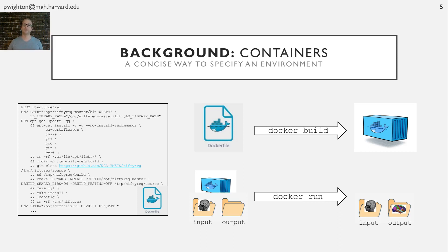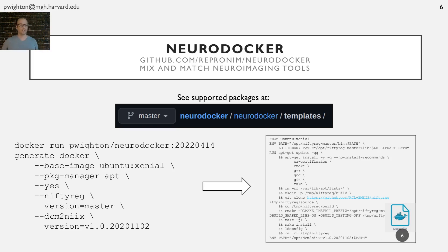While Docker is great at specifying environments, it lacks a framework for easily reusing individual components. While multi-stage builds partially alleviates this problem, a tool to help mix and match software versions and create Docker files would streamline the process considerably. This is where NeuroDocker comes in. NeuroDocker is a great open source tool to help pick and choose exact versions of software packages and easily create Docker files. For example, the NeuroDocker command on the left generates the Docker file you see on the right. And you can see a full list of the software they support in the templates directory of their GitHub repository.